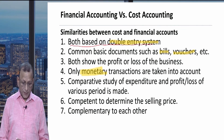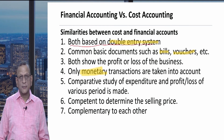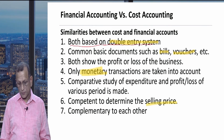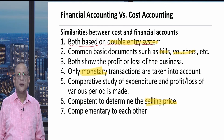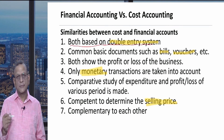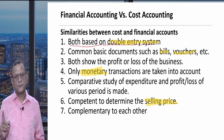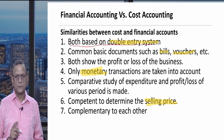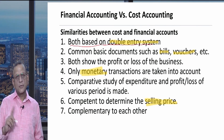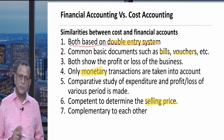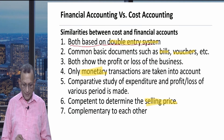The sixth point is that both are competent to help determine the selling price. Financial accounts have some limitations related to establishing a selling price, but cost accounts address this better. Still, both accounts are in a position to help us determine the selling price.